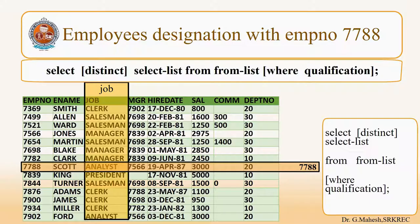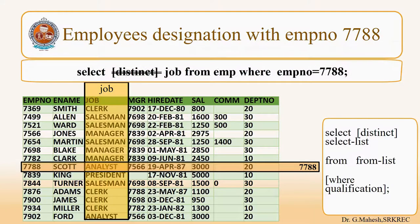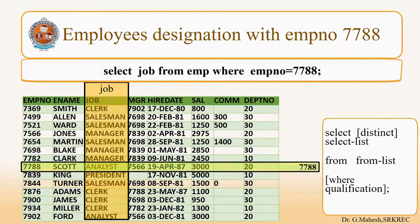Now the query is employee's designation with employee number 7788. The employee with employee number 7788 is Scott, whose job is ANALYST — that we want to display. Therefore in the selection list you have to give the column name JOB, and the condition is EMPNO = 7788. The results are shown in the PPT.